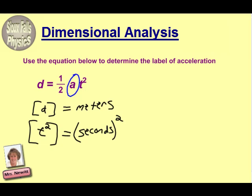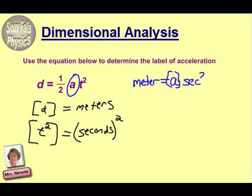From this, it's really just an algebra problem. Write it out in the same form that the equation is. Distance is meters, so we replace that with meters. Notice that the one half has no label, so we really don't need to even worry about the one half for this part of the problem. Here's our acceleration, and we use the brackets there just to show that we're talking about the label of it. And then the time would be the seconds squared.